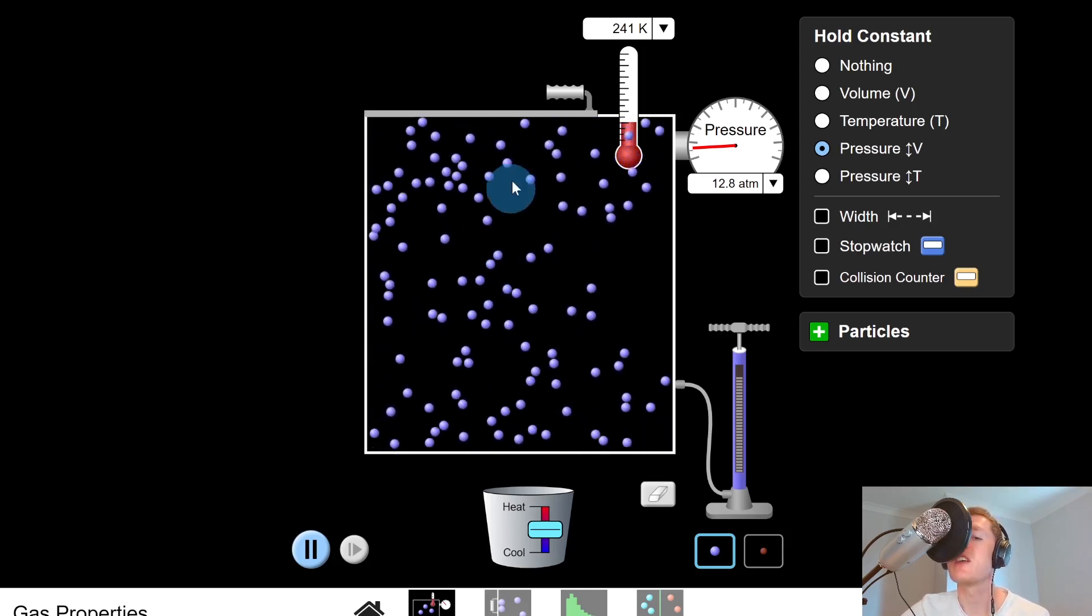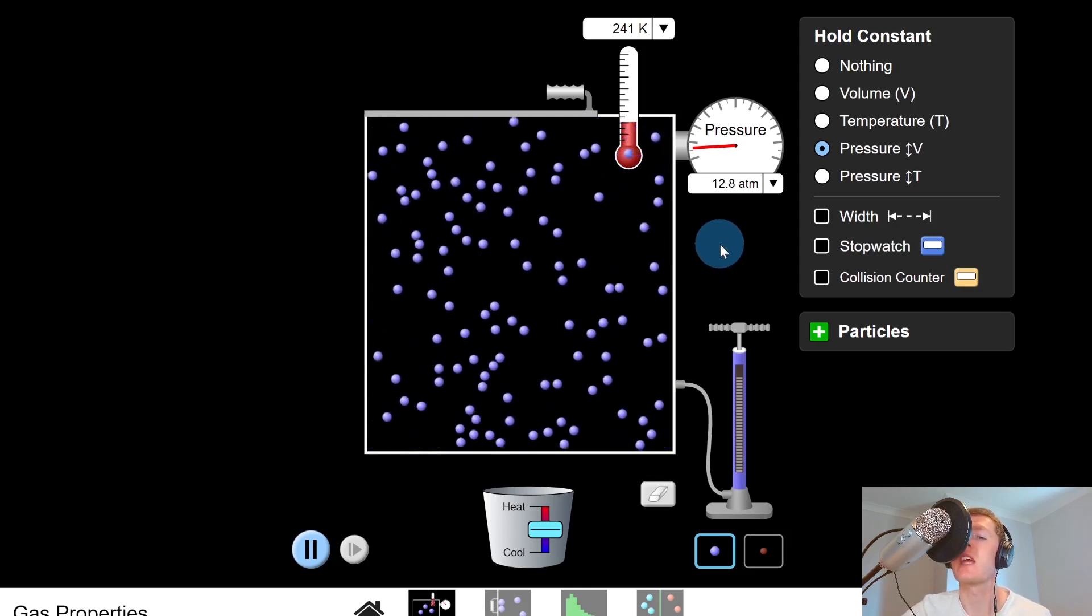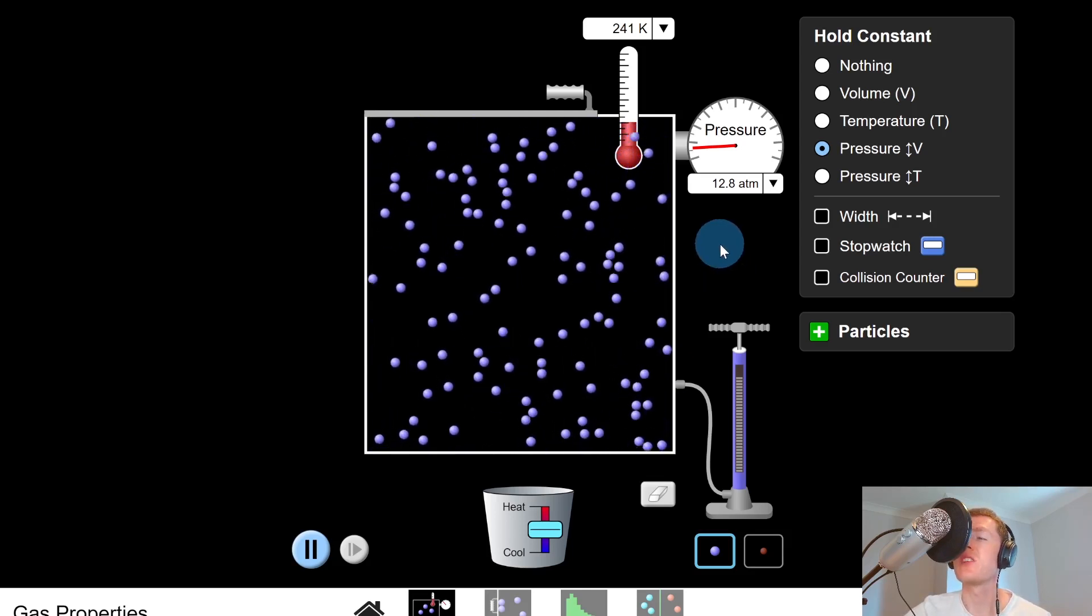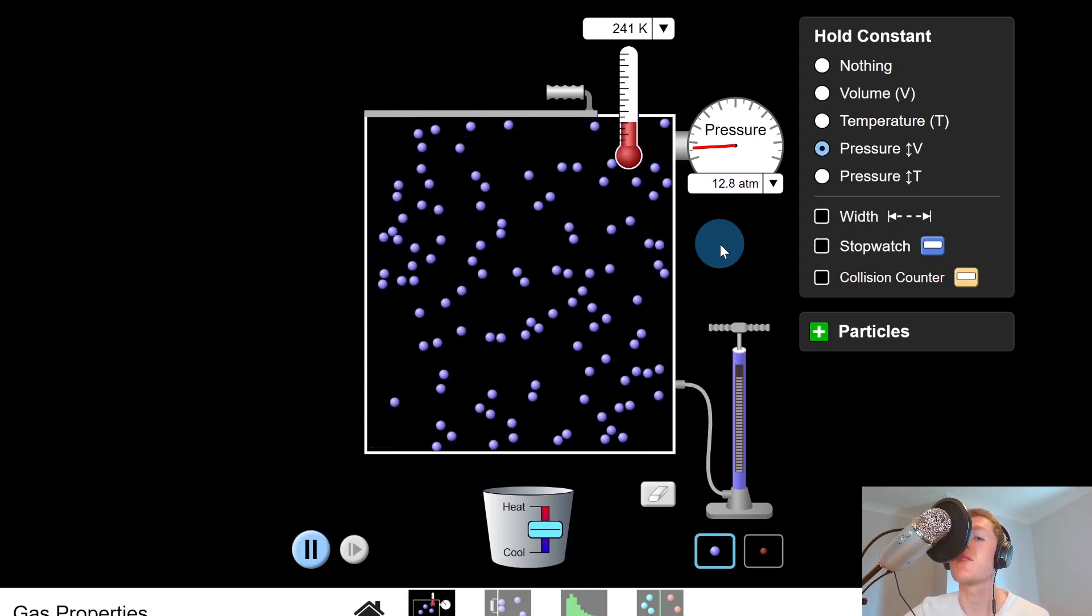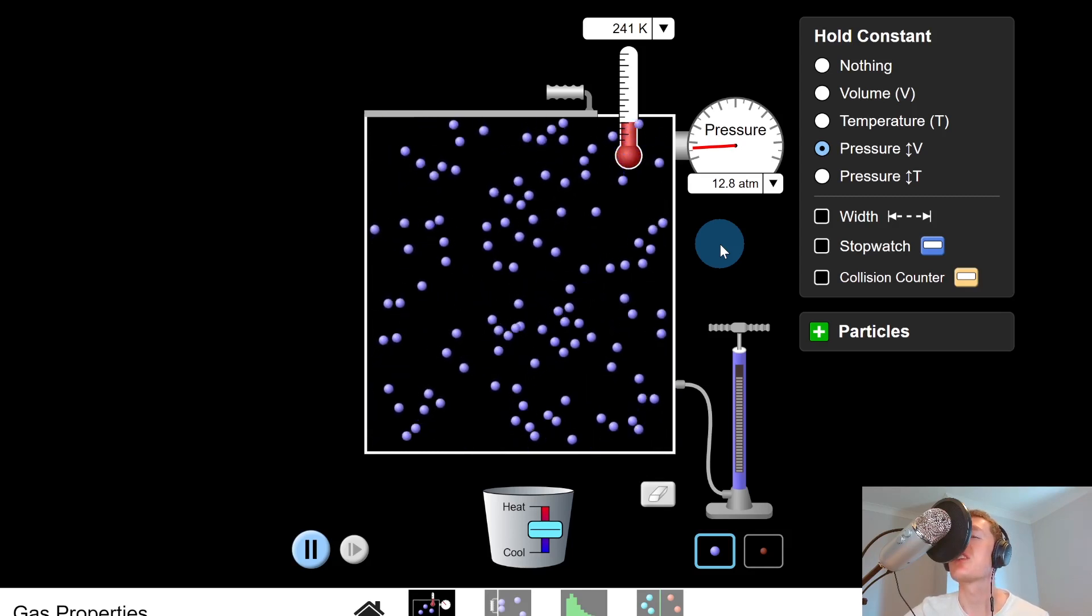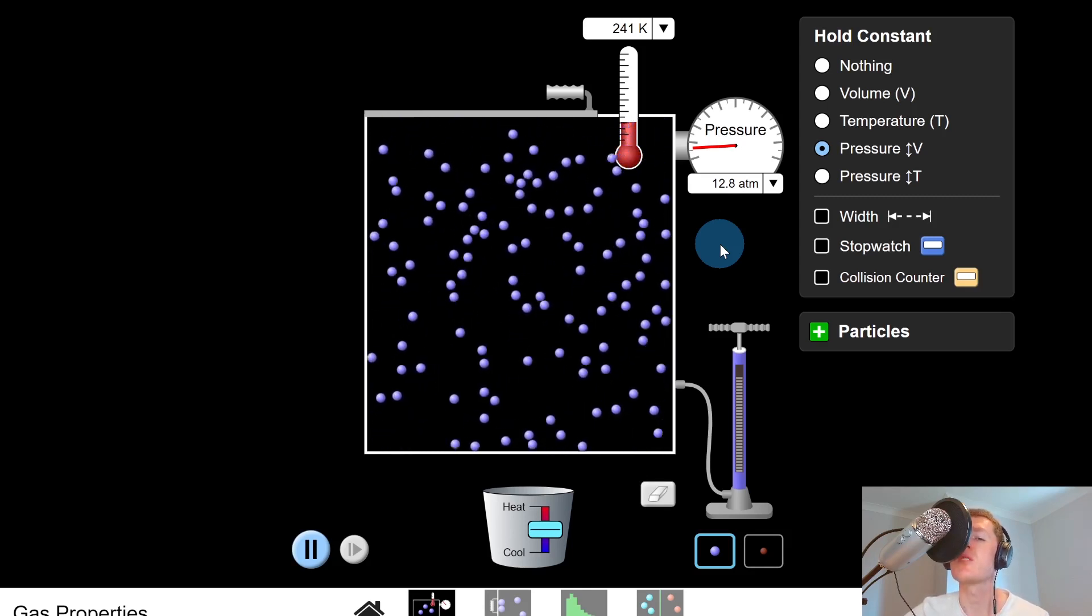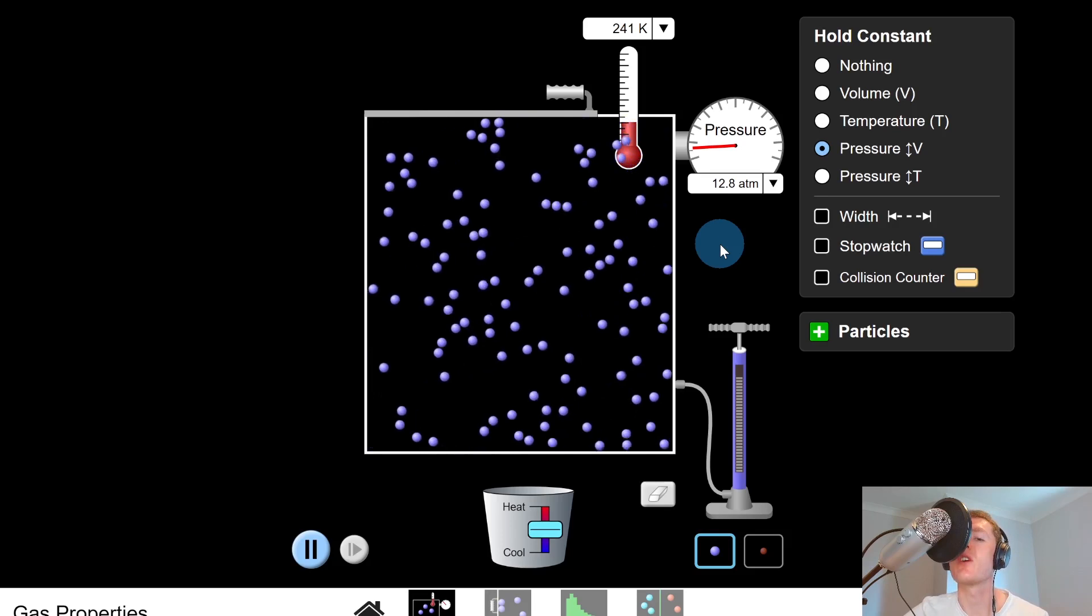So we can see that a decrease in temperature causes a decrease in volume of the gas. So what we've done is explained Charles' law in terms of the kinetic model, so you need to make sure you can do this with reference to the kinetic energy of the particles, the number of collisions of the particles with the container walls, and also the change in the size of the container here.